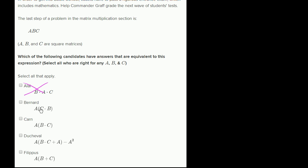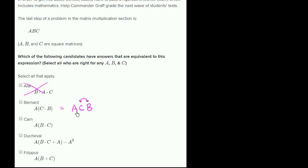Here you have Bernard who says A times C times B. We already know that's going to be equivalent to ACB, which once again swaps the order between the B and the C. Matrix multiplication is not commutative — you can't just swap order and expect to get the same product for any square matrices A, B, and C. So we can rule that one out.